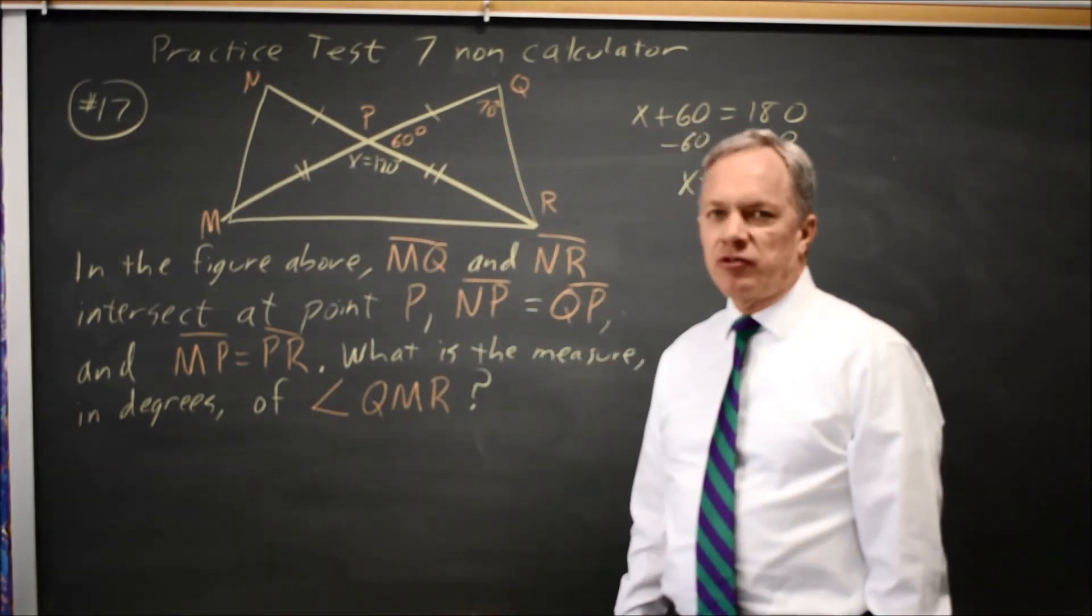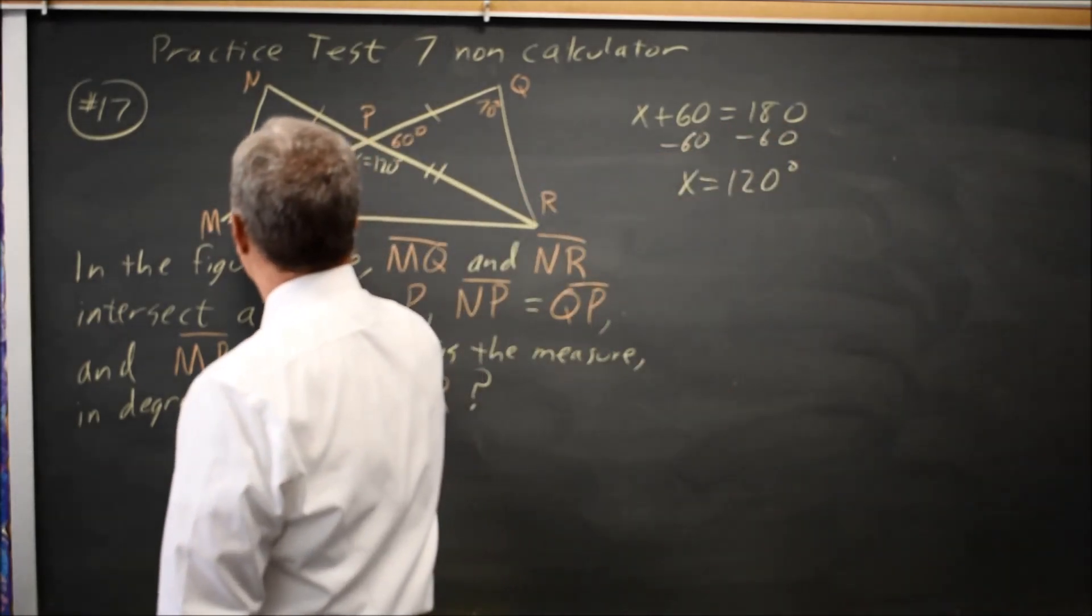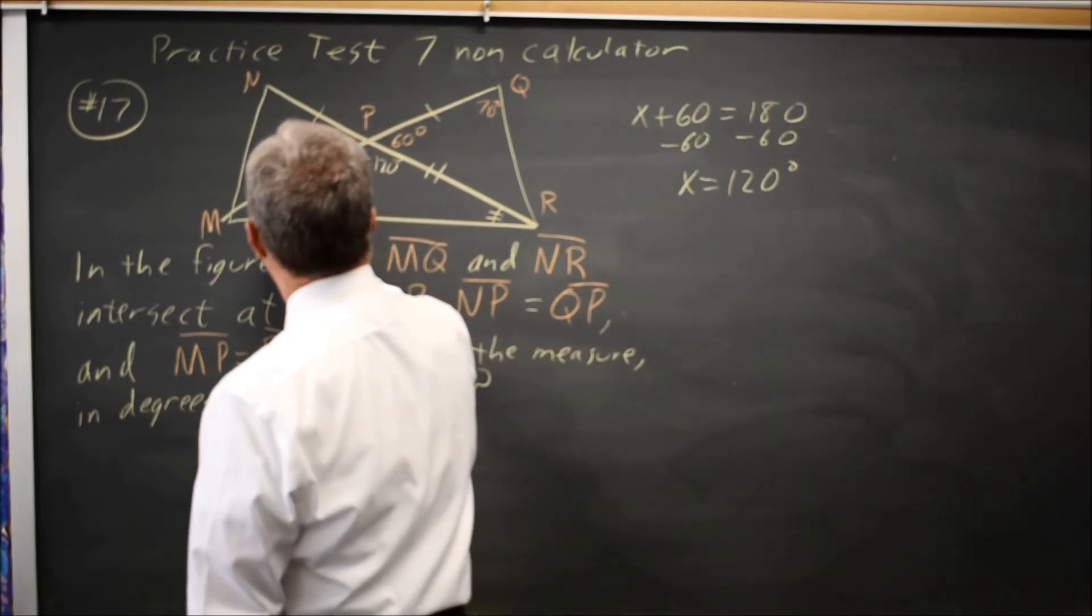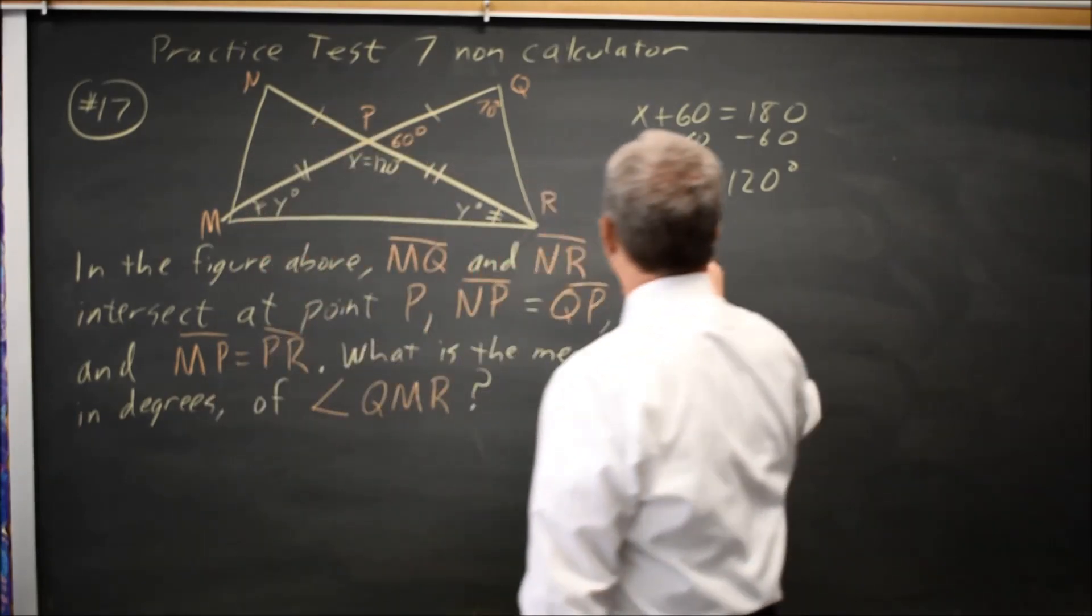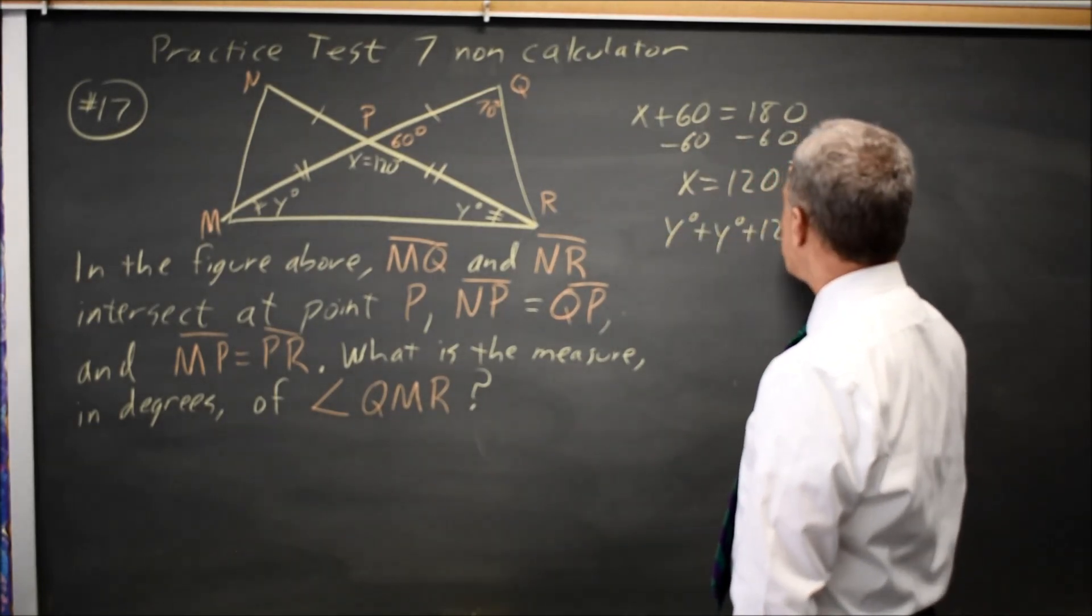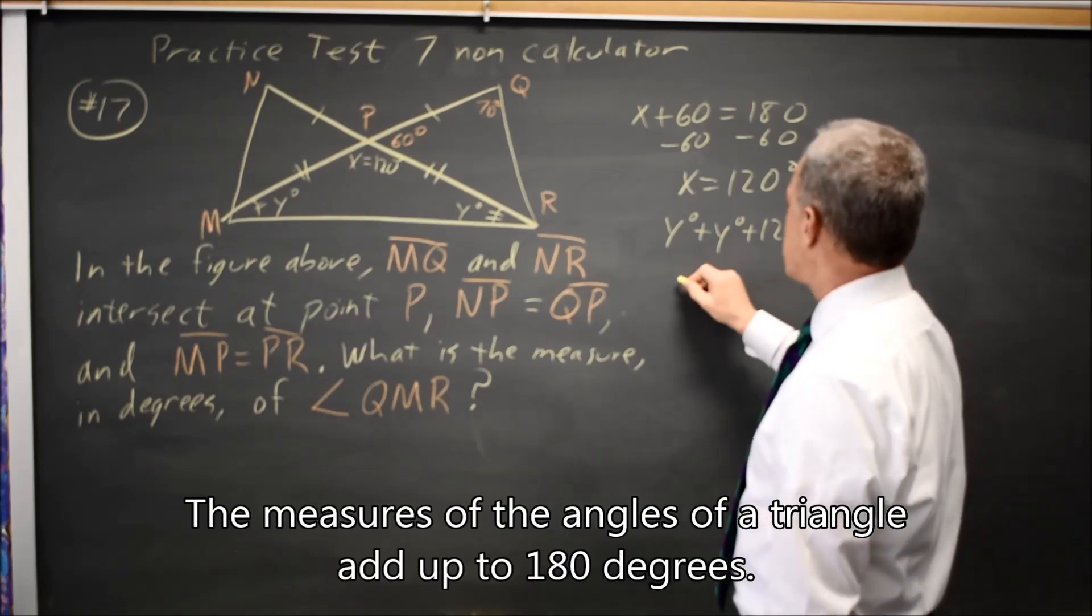I also have two sides equal, so these two angles are equal. And let's call that Y. Y degrees plus Y degrees plus 120 degrees equals 180 degrees. And I'll leave out the degree symbols from now on.